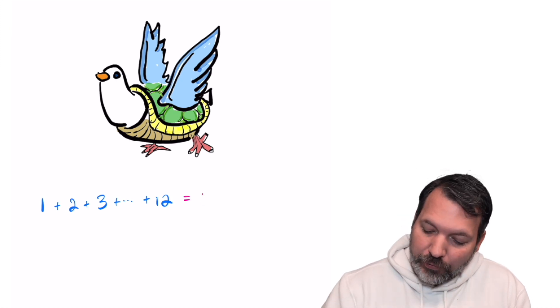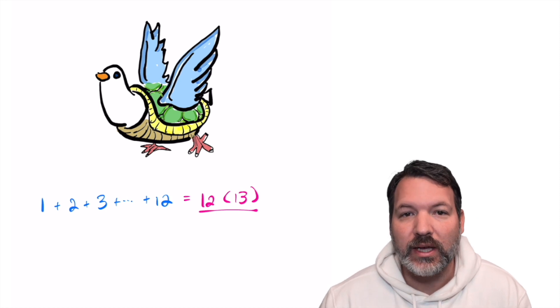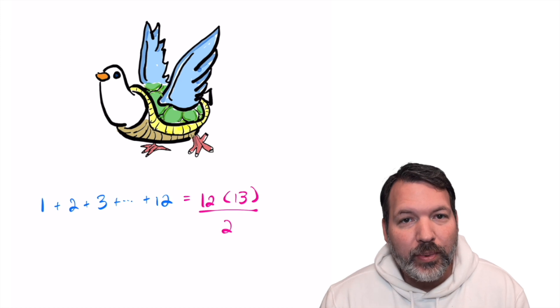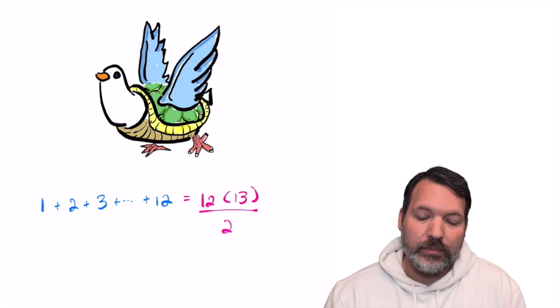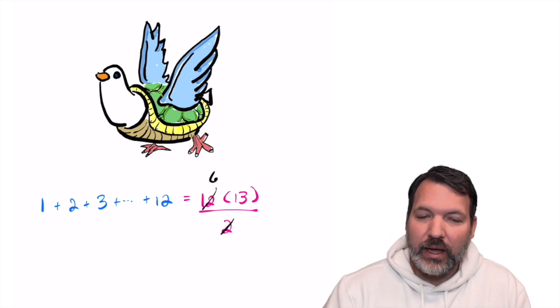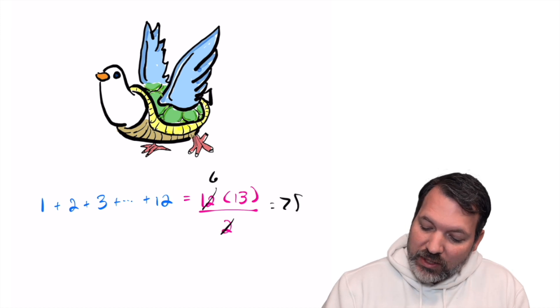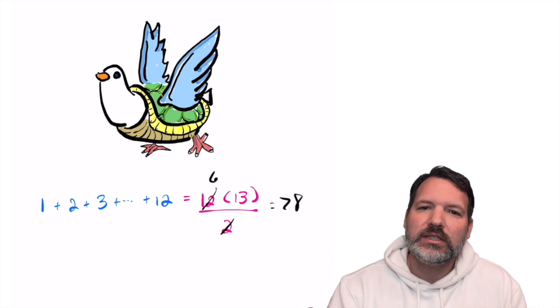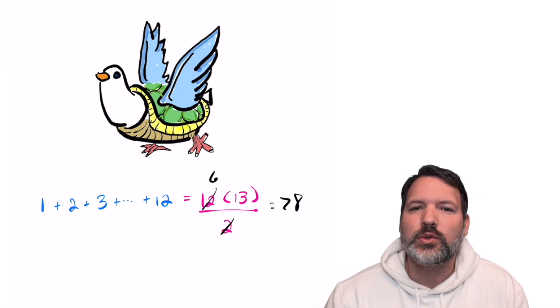I know there happens to be a neat little formula for this kind of problem. You just take whatever that last number is in the list, increase it by one, multiply those two things together, and divide by two, and that's your sum. So very quickly I work out in my head, six times 13 equals 78, and I confidently tell my student, 78, there are 78 gifts by the end of the 12 days of Christmas.